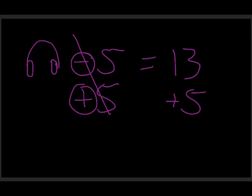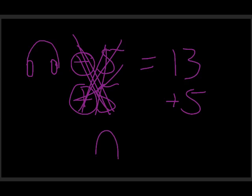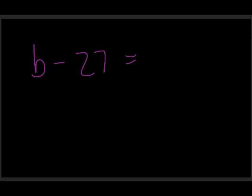For example: headphones minus 5 equals 13. I add 5 to both sides. On the left the minus 5 and plus 5 cancel out, leaving just headphones. On the right, 13 plus 5 is 18, so headphones equals 18. Check: 18 minus 5 is indeed 13.